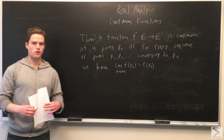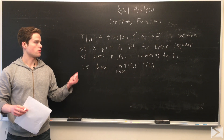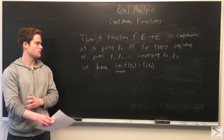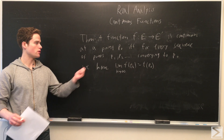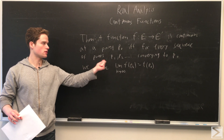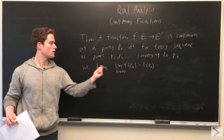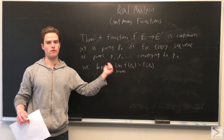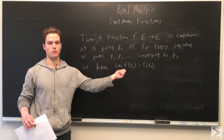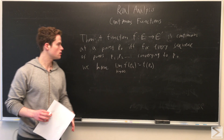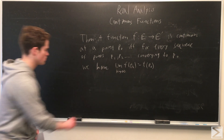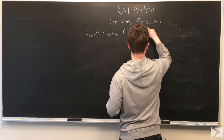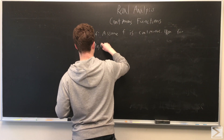Another thing we can prove is that a function going from E to E prime is continuous if and only if for every sequence of points P1, P2, ... converging to P-naught, the sequence F of P1, F of P2, ... converges to F of P-naught.